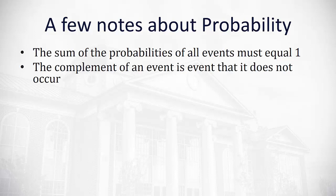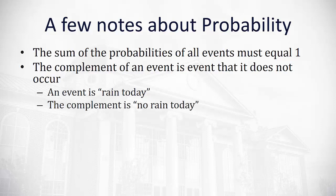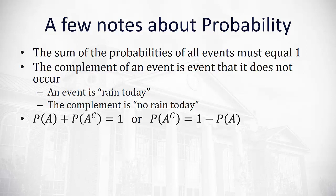We also have what's called the complement of an event — that's the event that what we're talking about does not occur. For example, if the event is it rained today, the complement would be it did not rain today. It's the opposite group. Because the sum of the probabilities of all events must be 1, the probability of our event plus the probability of its complement — notated with a superscript C — must equal 1. More often, to calculate the complement we do 1 minus the probability of a given event.